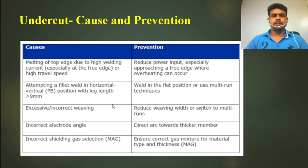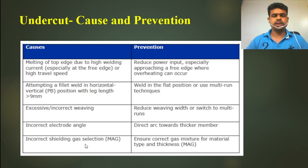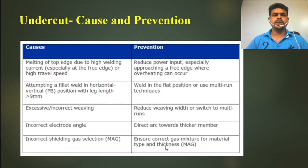To prevent this type of undercut, if the electrode angle is not correct it can cause this problem — prevention is to direct the arc towards the thicker member. Incorrect shielding gas selection can also cause undercut — make sure to use the correct gas mixture for the material type and thickness. Basically, these are the causes and prevention for undercut.